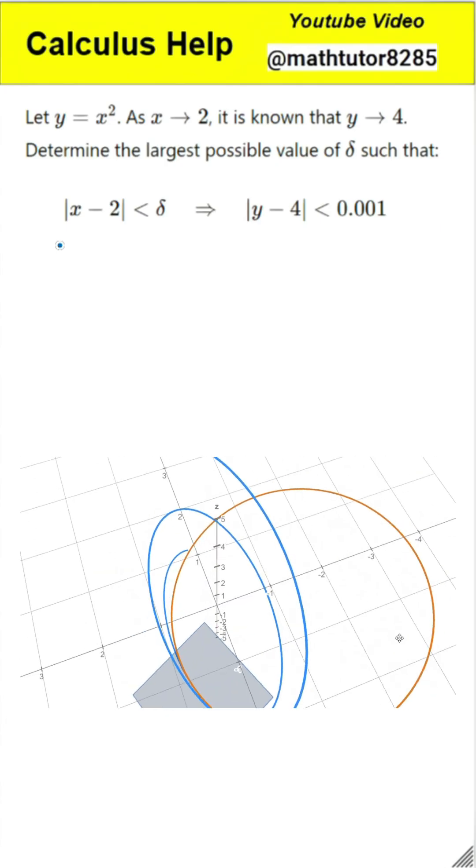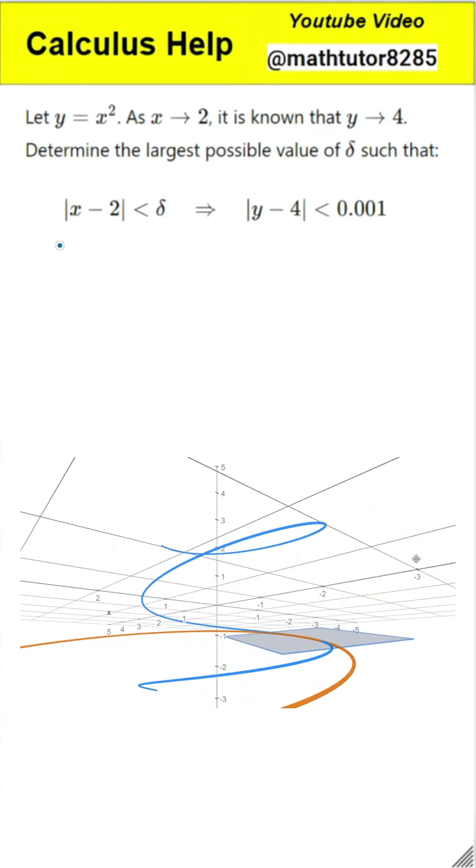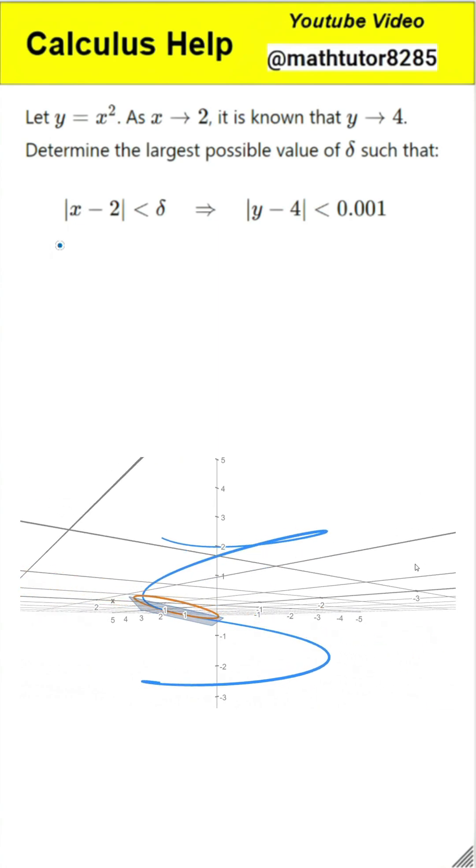This question is to find the epsilon-delta limit of x-squared. We are given that y equals x-squared, and as x approaches 2, the value of y approaches 4.